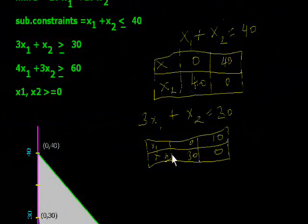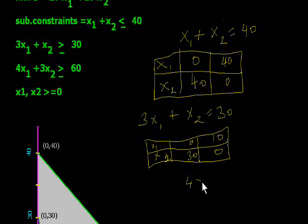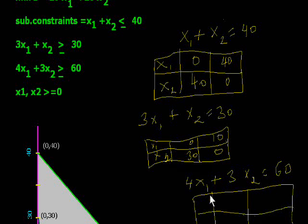For 4X1 + 3X2 = 60, we again make a table with X1 and X2. If X1 is 0, then we divide 60 by 3 and it will be 20. If X2 is 0, then X1 will be 60 divided by 4, which is 15.